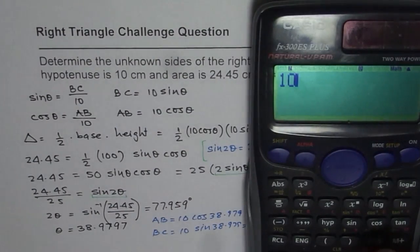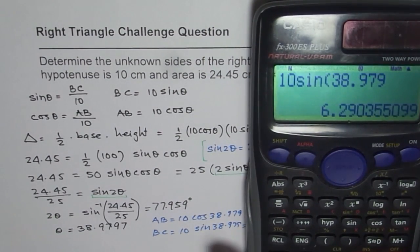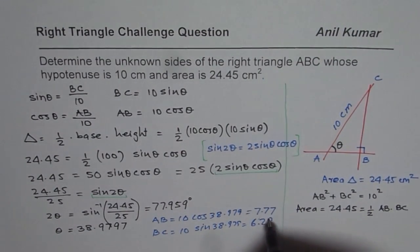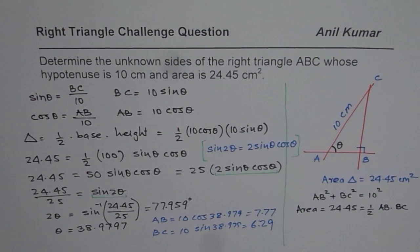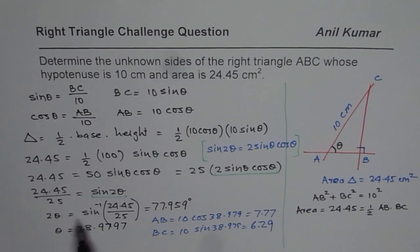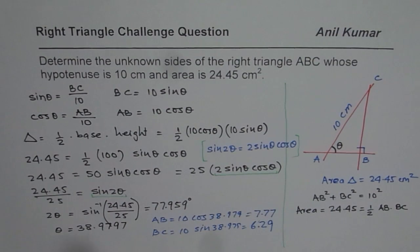So let us do that. So it is 10 times sine of 38.979. That gives us 6.29. Okay. 6.29. So that is how you can get the sides. And as you will see, I have maintained the numbers area. So my request is that in your case, you have different numbers. You can substitute those numbers and get the solution in the way I have done. I hope that helps.